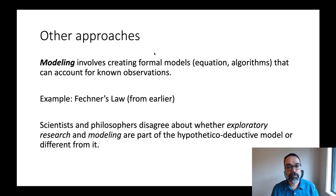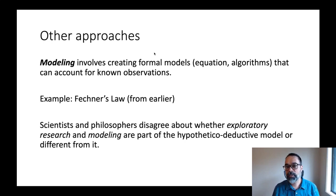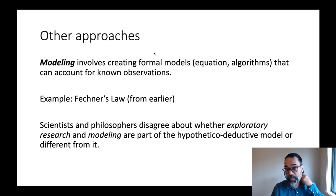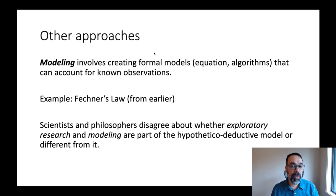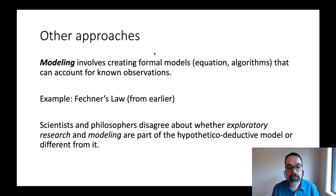Another approach scientists sometimes use is modeling — creating formal models, equations, or algorithms that can account for known observations, or that factor in assumptions and then show where they lead. An example mentioned in the last video is Fechner's law, a simple equation relating physical properties of a stimulus to the subjective experience of them. More complicated models are also used — sometimes to generate new hypotheses to test, and sometimes just to see what the implications of a set of assumptions are when followed to their logical conclusion.